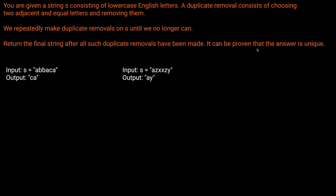Let's look at some examples. We have the string A, B, B, A, C, A. If we process this from left to right: we have our A, which is fine, there's no duplicate. Then we have our B, which is fine — no two adjacent equal letters. Then we get the second B, and now we have two letters next to each other, so we have to remove them. Now our string just becomes A. Then we get the next letter — another A — so now we have two A's next to each other, which we can't have, so we delete them. Now we're left with an empty string. Then we get C, no duplicates next to each other. Then we get the final A. So we come to the end of our string with C, A. We've removed all duplicate letters.